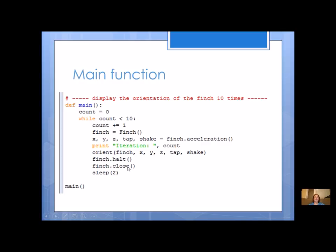I'm going to halt and close — this isn't absolutely necessary, but I found that when looking for tap and shake values it works better and is more accurate if you close and then create a new object each time. With each iteration of the loop, declare a new Finch object and get its values — you can try it with or without this. Then I have a sleep so the loop runs every two seconds. Of course, call main — don't forget that important part.